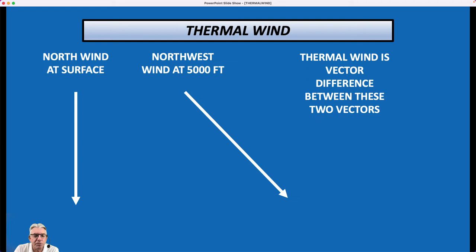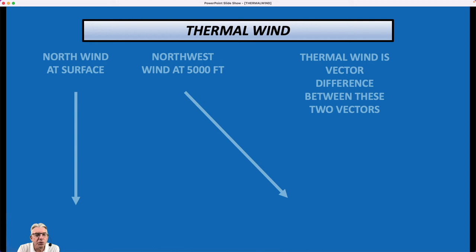For those of you that remember way back in school, you talked about vectors and vector addition and subtraction. So we're going to do a real simple review of that right now. Here's our north wind again. Here's our northwest wind. If we want to see what the difference is between the two, we have to match up the two beginning points of those arrows. And then the vector from the first one to the second one, from the endpoint to the endpoint, is the thermal wind.